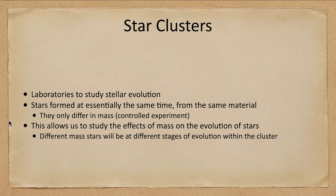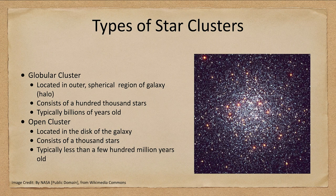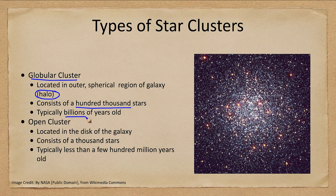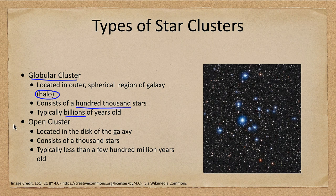Let's look at a couple of different types of clusters. Globular clusters are located in the outer spherical region of our galaxy called the halo. They consist of around a hundred thousand stars and can be billions of years old. Open clusters, on the other hand, are located in the disk of the galaxy, consist of maybe a thousand stars, and are typically less than a few hundred million years old.